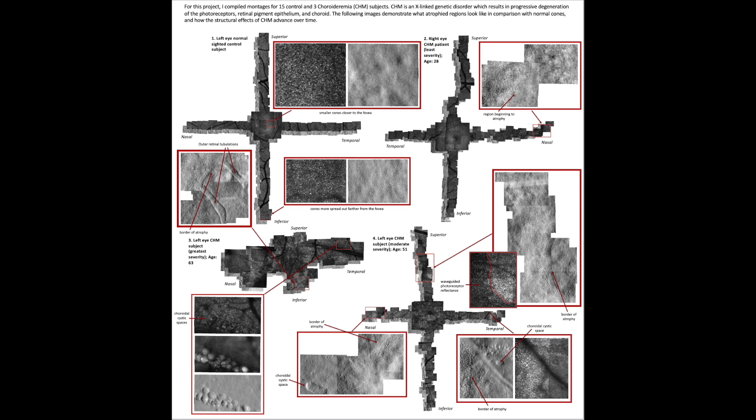CHM is an X-linked genetic disorder which results in the progressive degeneration of the photoreceptor and choroid underlying layers, leading ultimately to tunnel vision in its latest stages.